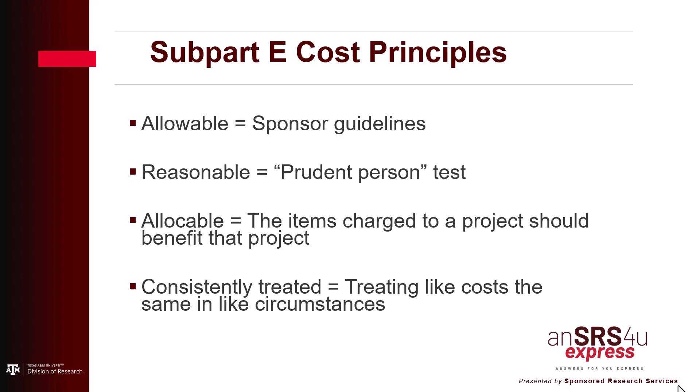Consistency is also required: each item of cost incurred for the same purpose must be treated consistently in like circumstances, either as a direct or an indirect cost, in order to avoid possible double charging of federal awards. Subpart E also lists selected items of cost and whether they are generally allowable or unallowable, and whether they should normally be considered a direct or an indirect cost.